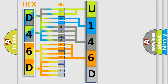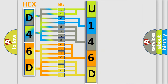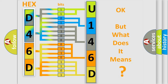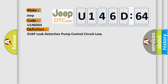A single byte conceals 256 possible combinations. We now know in what way the diagnostic tool translates the received information into a more comprehensible format. The number itself does not make sense to us if we cannot assign information about what it actually expresses. So, what does the diagnostic trouble code U146D64 interpret specifically for Jeep car manufacturers? The basic definition is: Evap leak detection pump control circuit low.